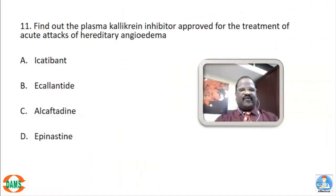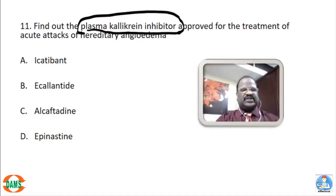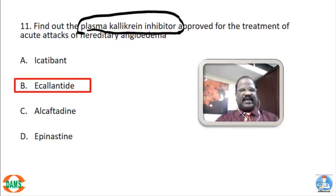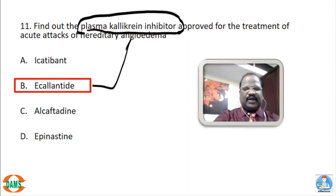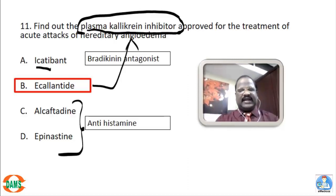Question 11: Find out the plasma kallikrein inhibitor approved for treatment of acute attack of hereditary angioedema. The options are icatibant, ecallantide, l-cetirizine, and epinastine. The right answer is option B, ecallantide — a kallikrein blocker useful for treatment of angioedema. Icatibant is a bradykinin antagonist useful for angioedema, whereas l-cetirizine and epinastine are antihistamines useful to control allergy or angioedema.